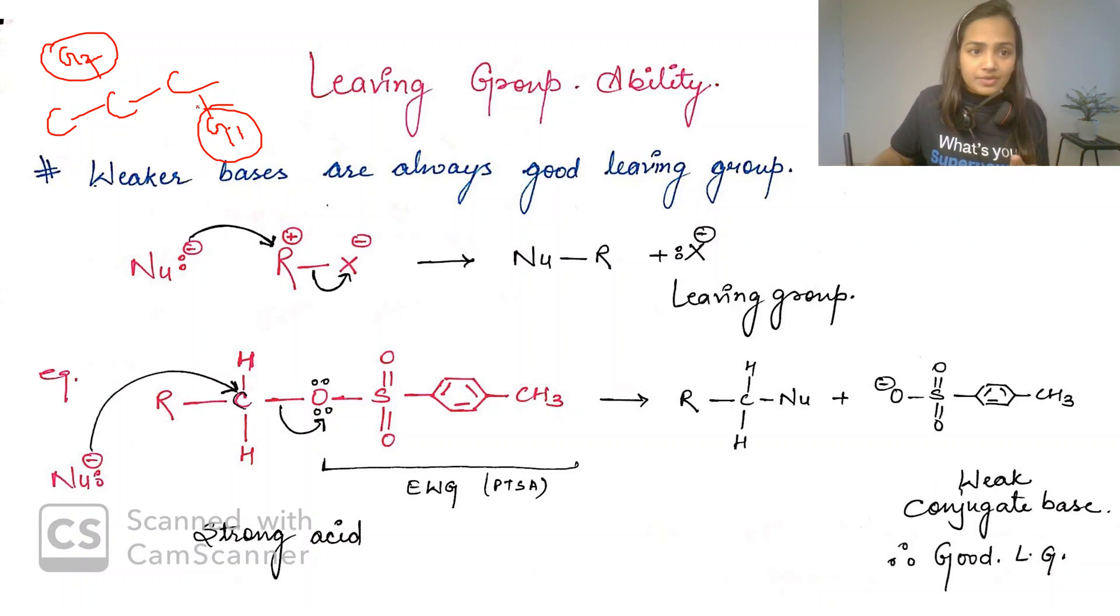This sigma bond is a strong bond, but due to polarity and electronegativity difference this bond can be weak. It depends on the property of the group. We have to identify which group forms a weak bond - that will break and leave. Now we have to compare if G1 is a better leaving group or G2, depending on their nature.